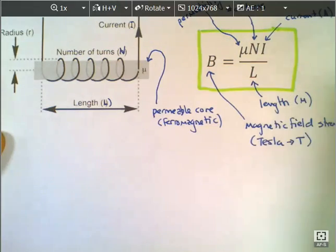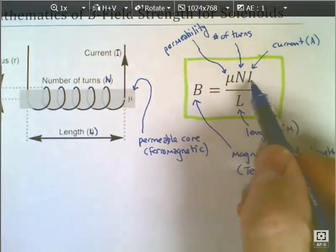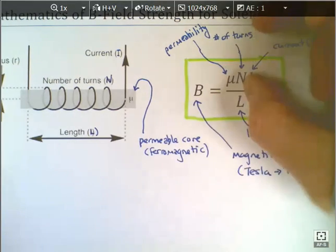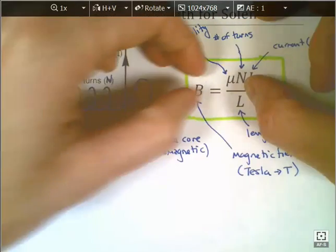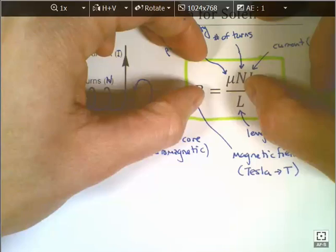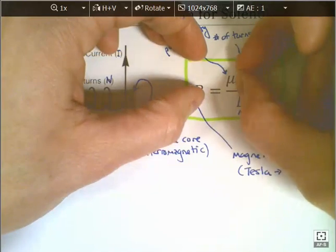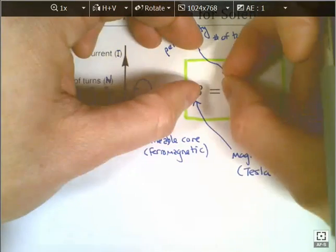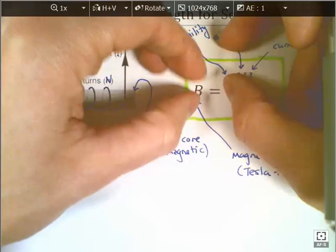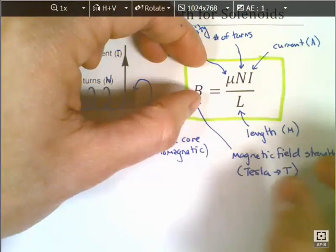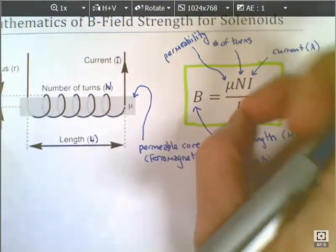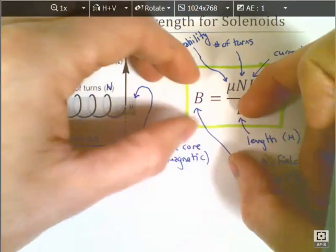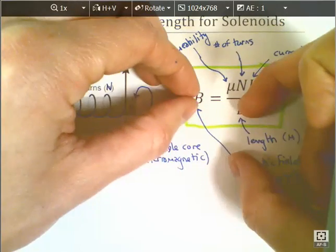Anything in the numerator: if you jack up the current I and it gets really big, then B has to also increase in size. If N gets really big, then B must get really big. And if mu gets bigger, B must get bigger. The only one that's a bit different is L — if L gets bigger, you're dividing by a bigger number, and therefore B will shrink and get smaller.